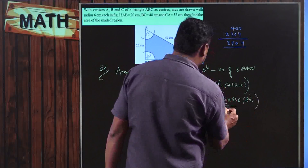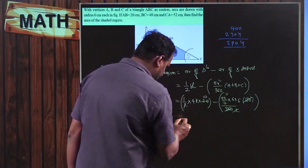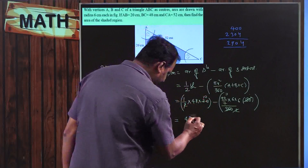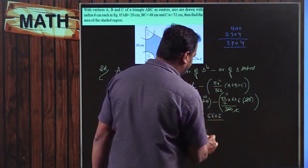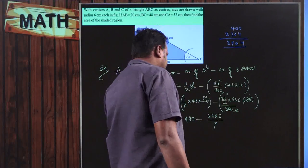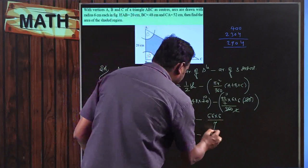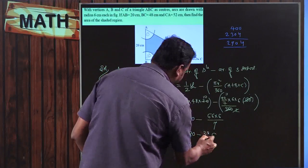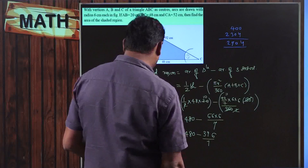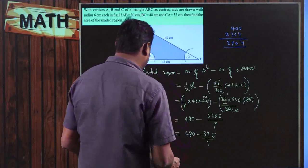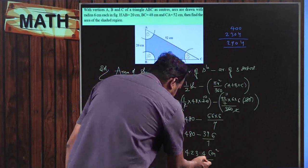So 2 ones and 2 elevens cancel, and 2 tens give 20. Therefore: 48 × 10 = 480 for the triangle area part. Minus: 11 × 6 × 6 / 7 = 11 × 36 / 7 = 396/7 ≈ 56.57. So 480 − 56.57 = 423.43. Therefore the area of the shaded region is approximately 423.4 cm². This problem is also pretty straightforward once you understand the approach.